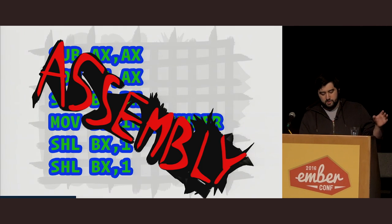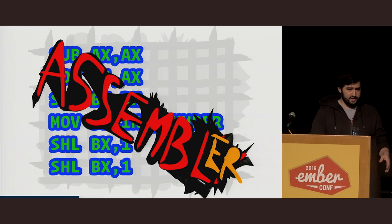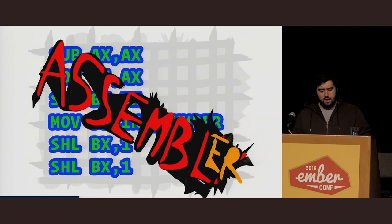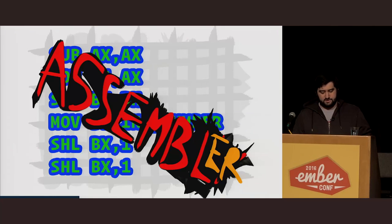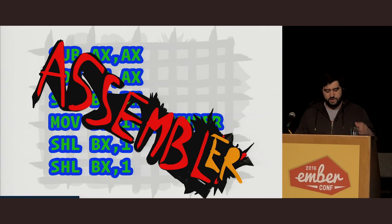Assembly is a super low-level programming language that gets converted into binary code by a thing called an assembler. Externally, an assembler looks a lot like a compiler — it's taking one type of code and translating it into a lower-level type of code. However, internally, they're much simpler than compilers. Ignoring any kind of optimization an assembler might be doing, they're really just a straight mapping of one syntax to another.